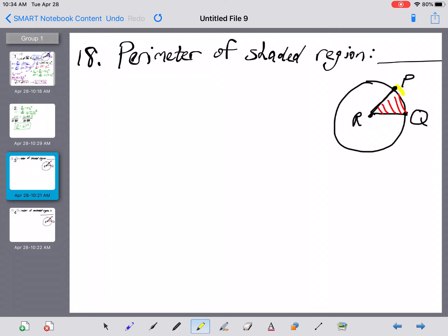We already found in the last problem the measure of this arc out here, PQ, and we also need to know RQ and RP. Well, let me actually start with those last two.